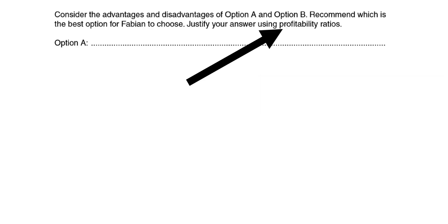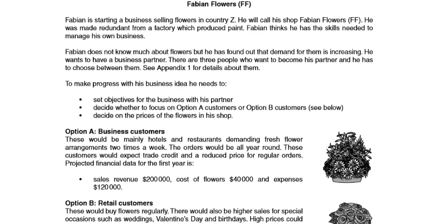We need to have a look at the case study and see what the current business situation is all about. When we're offering an application, our initial points should derive directly from the case study — they shouldn't be generic in any way. It should relate to Fabian's situation. Fabian is starting a business selling flowers in country Z. As you can see in the appendix, he needs to decide whether to focus on option A customers or option B customers.